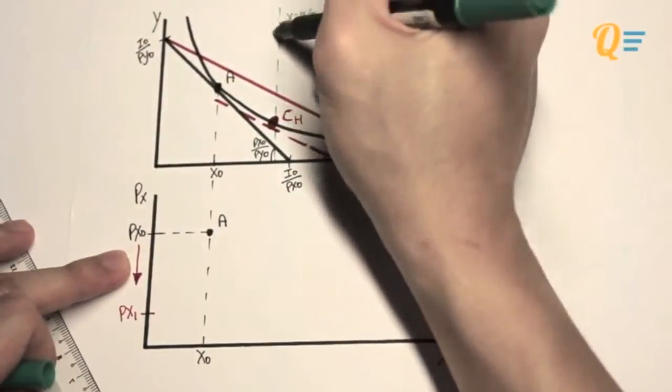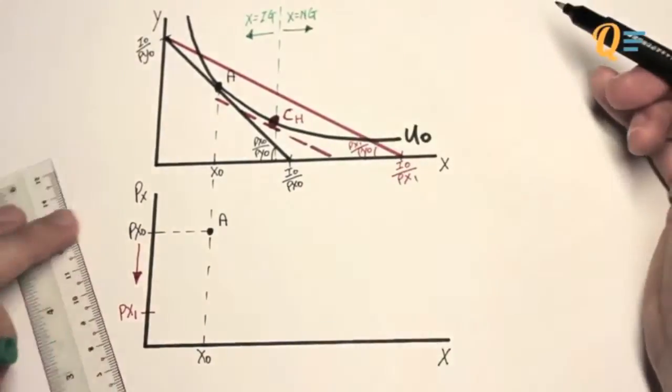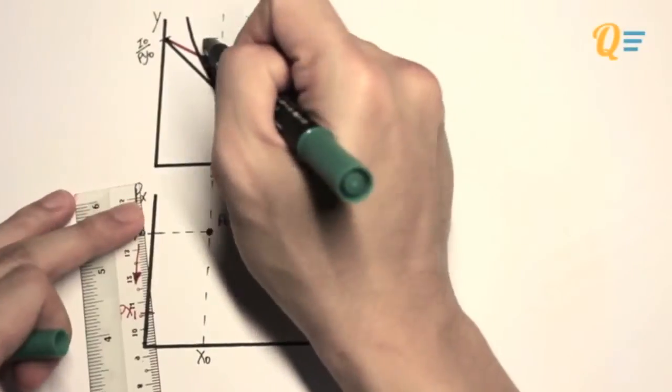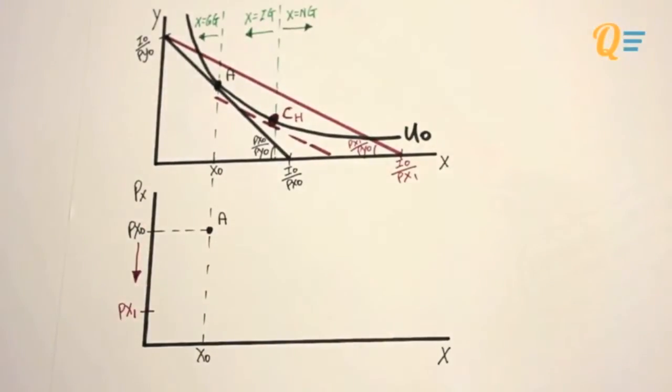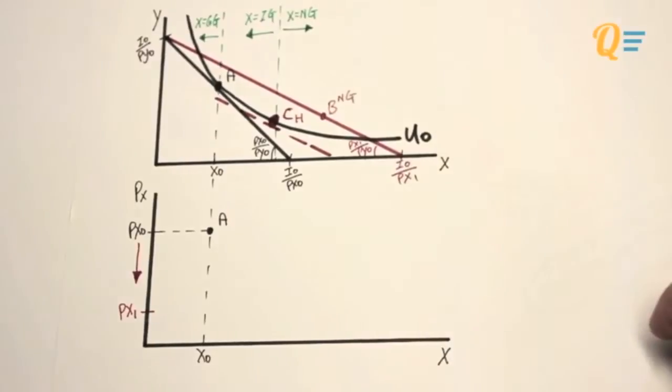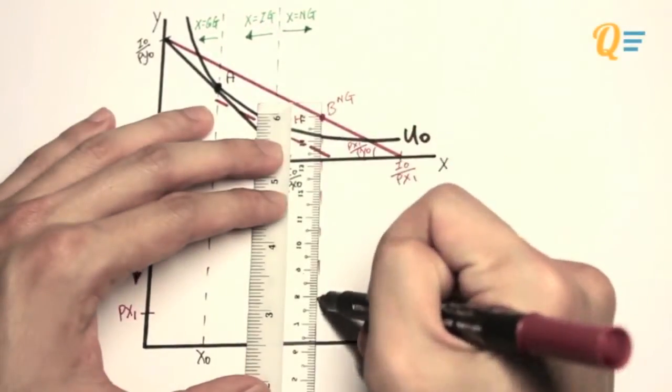So therefore, if I move to the right side of point C, X is a normal good. And if I move to the left side, X is an inferior good. And I know that beyond point A, X is a Giffen good because the income effect will be larger than the substitution effect. And let's just say that good X is a normal good, so I've got point B.